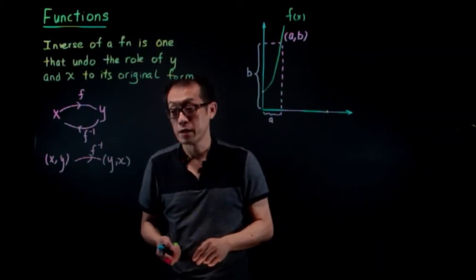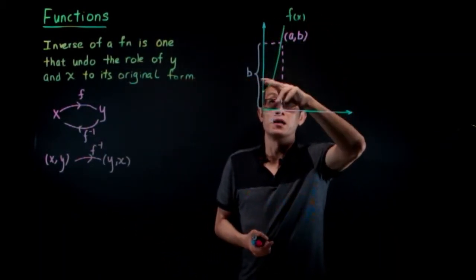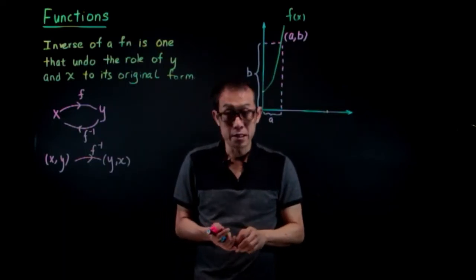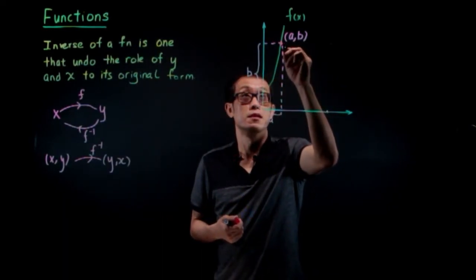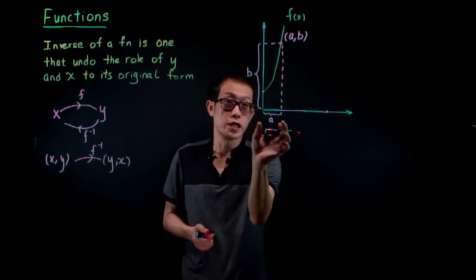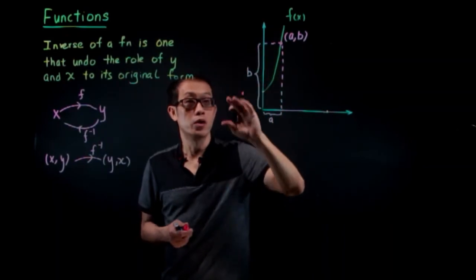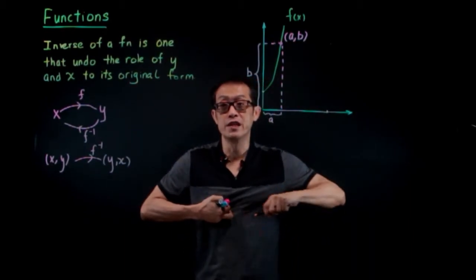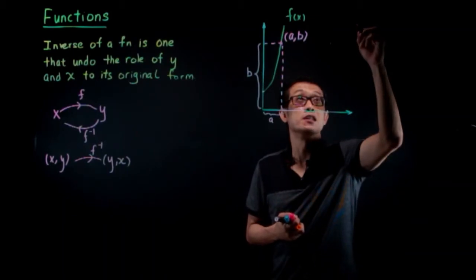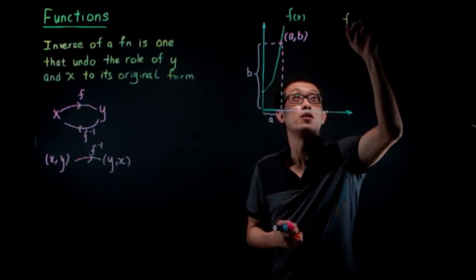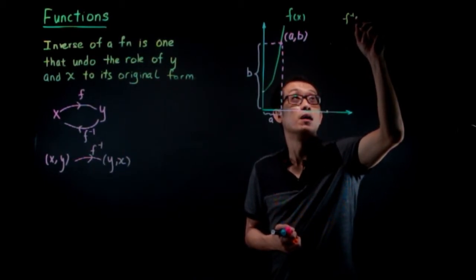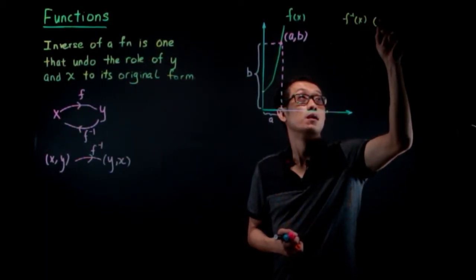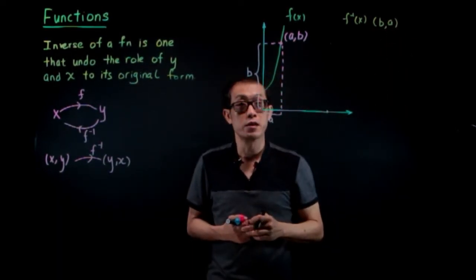I have drawn a graph of F of x in green. Let's take a point on F of x — say the point is (A, B), where the x-coordinate is A and the y-coordinate is B. The corresponding point under the inverse function will be (B, A).